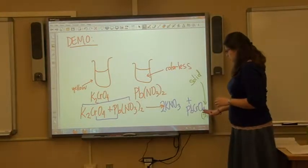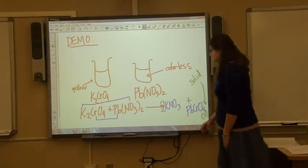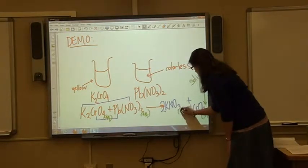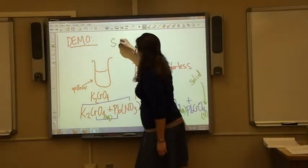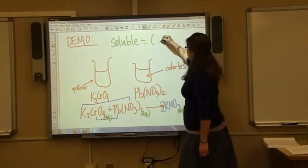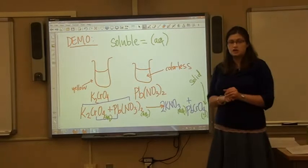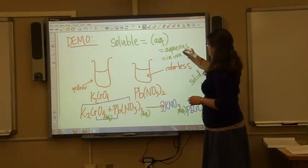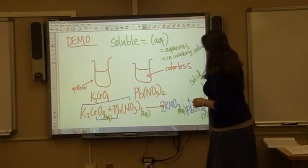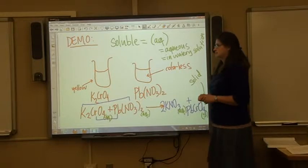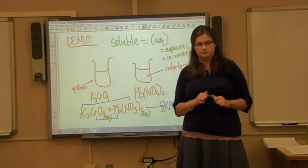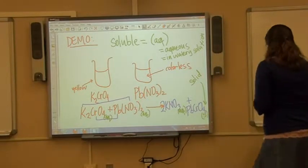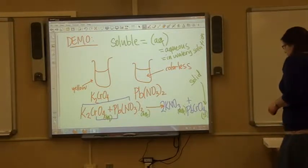To tell the full story of the chemical reaction, we need to include states of matter. For each substance that is soluble, it gets the (aq) symbol. AQ stands for aqueous, which means in a watery solution — you are in solution, you're soluble, and there are no little particles of solid at all.